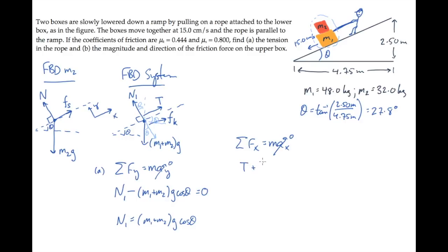Tension and kinetic friction are directed along positive x. This component, the weight times sin θ, is directed along negative x. Those sum to zero because there's no acceleration.